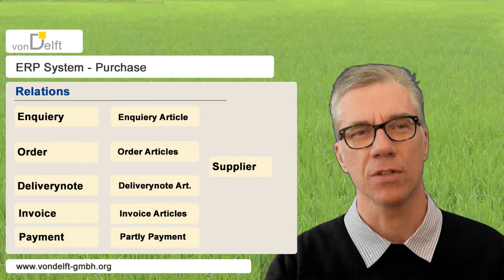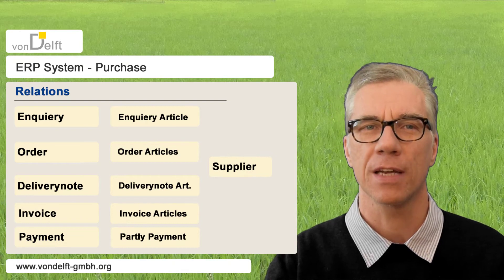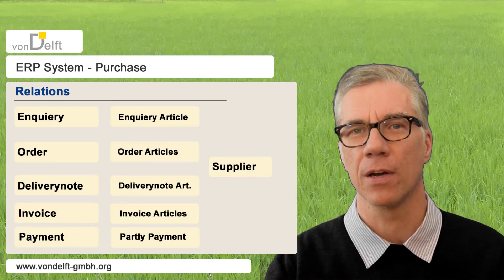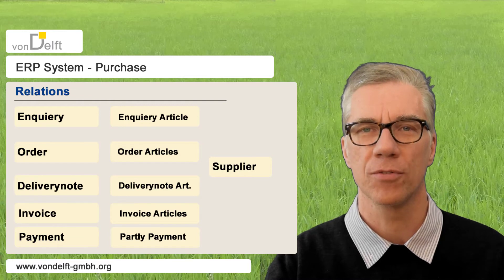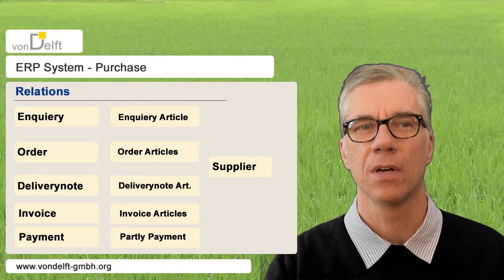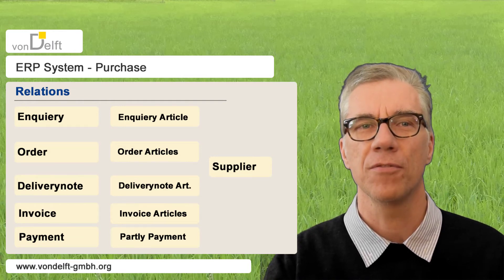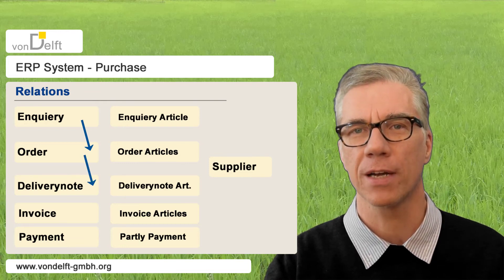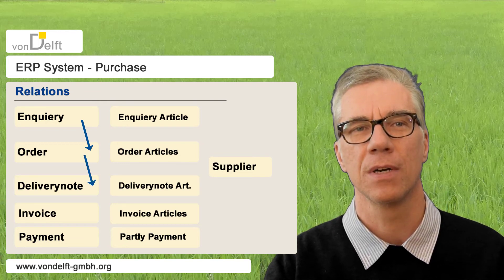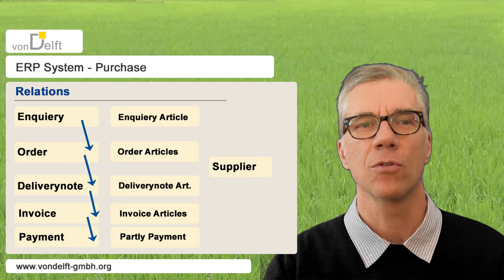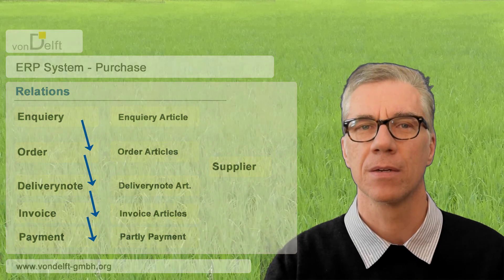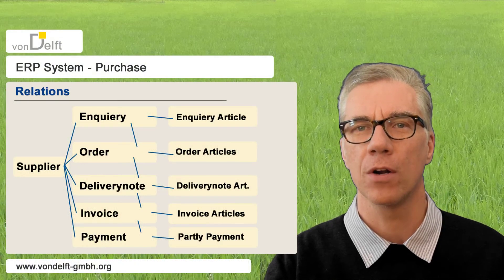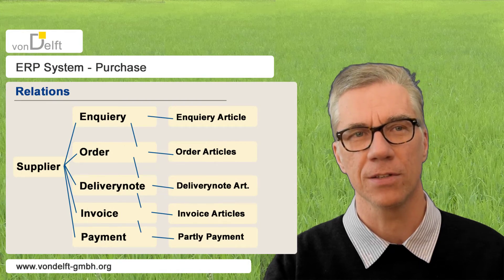Now to the relations. All the data objects are connected to each other. The offer has a connection to the inquiry, and the order has a connection to the offer — it goes like this until payment. There is a network where all data objects are integrated.